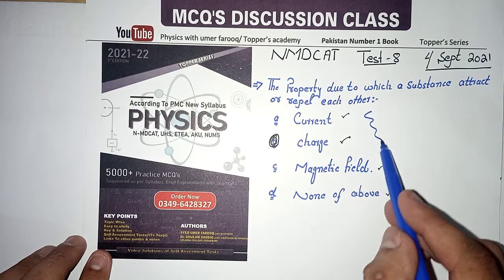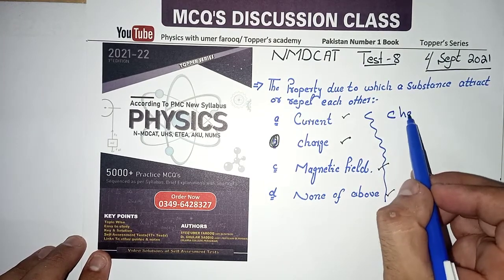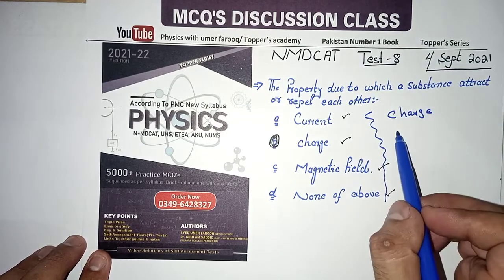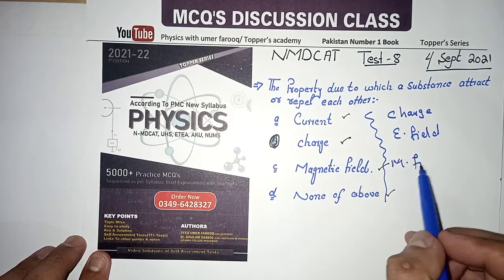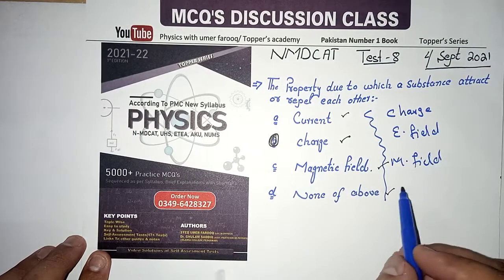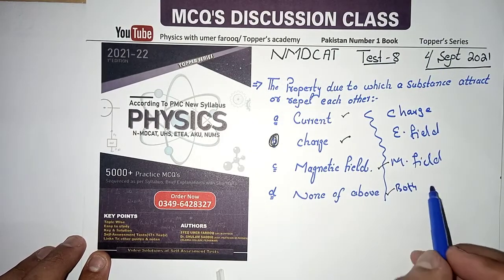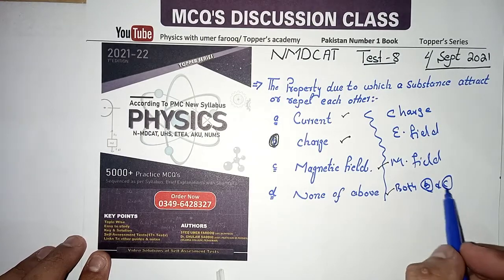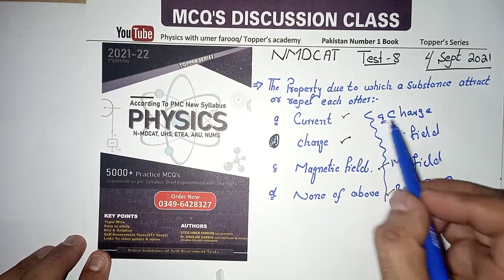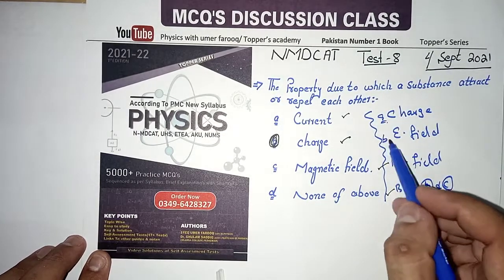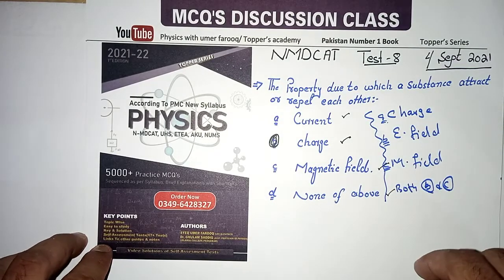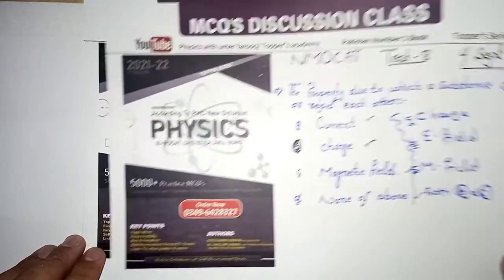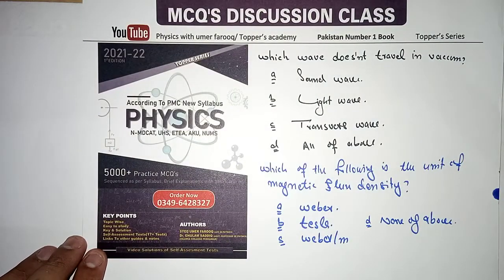The options could be: (a) charge, (b) electric field, (c) magnetic field, (d) both B and C. Students often select 'both B and C', but the correct option is charge. Now the second MCQ: which wave does not travel in vacuum? That is sound wave, because medium ki zaroorat hoti hai for sound waves.